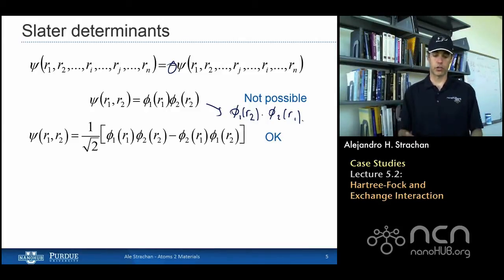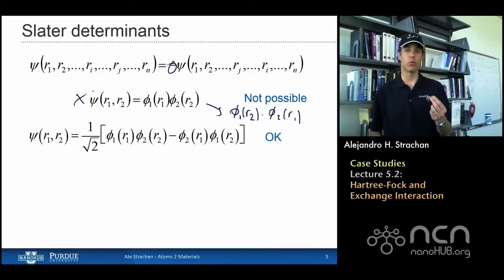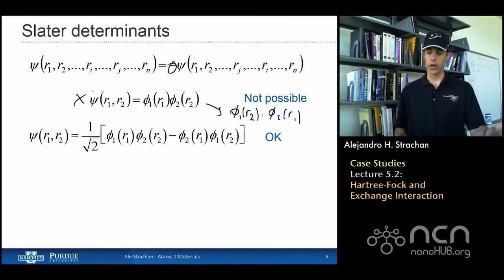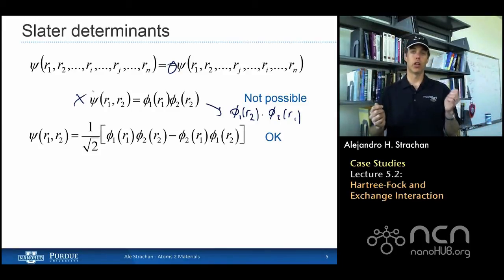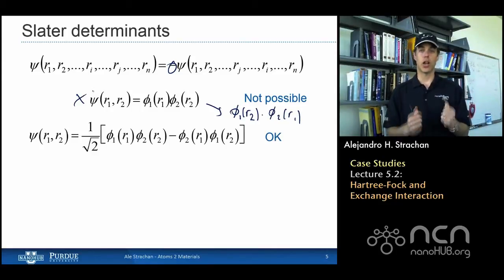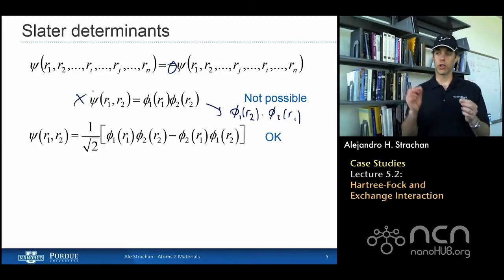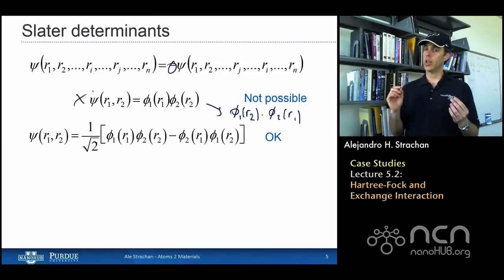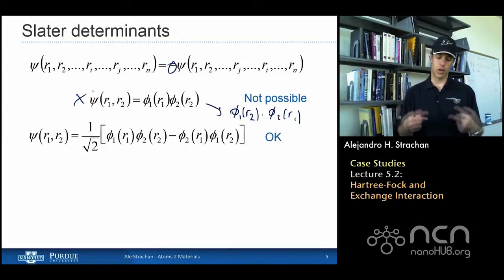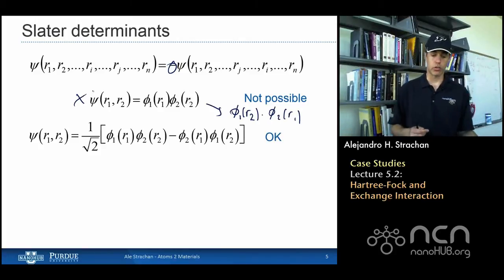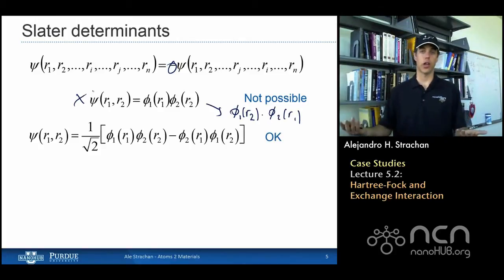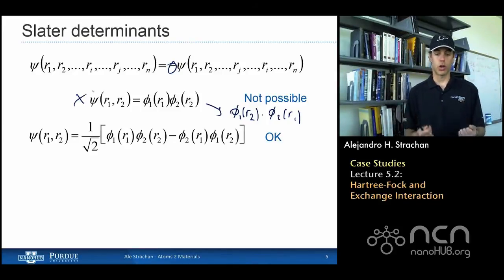In the simple product wave function, I can distinguish the two electrons — electron 1 is in orbital 1, electron 2 is in orbital 2. But that's not allowed by quantum mechanics; particles are indistinguishable. You cannot keep track of individual electrons, so that wave function just doesn't exist in nature. In the anti-symmetrized wave function, you cannot distinguish electron 1 from electron 2. Electron 1 is both in phi_1 and phi_2. That's a wave function with the right quantum properties.